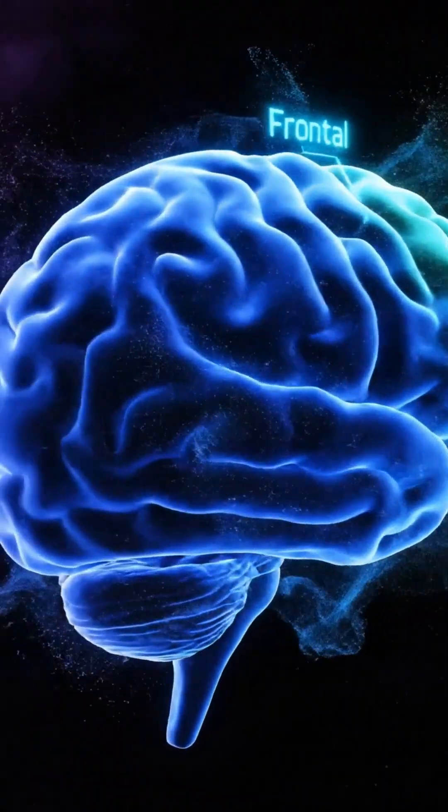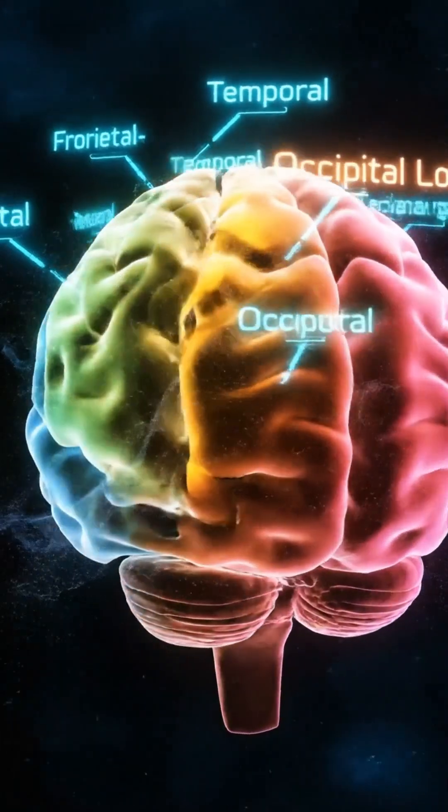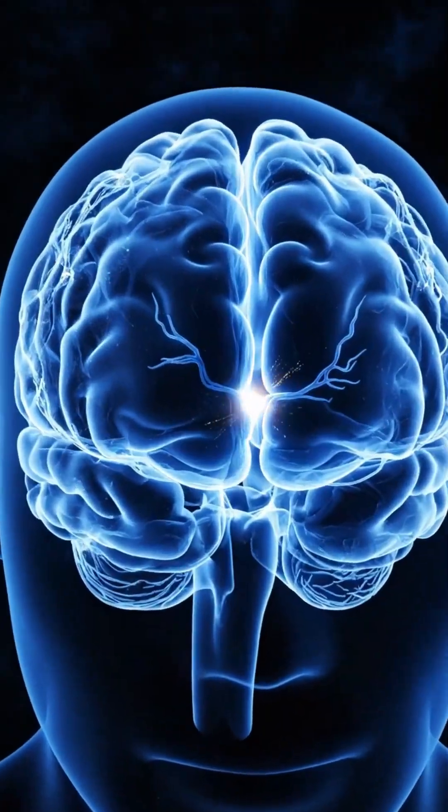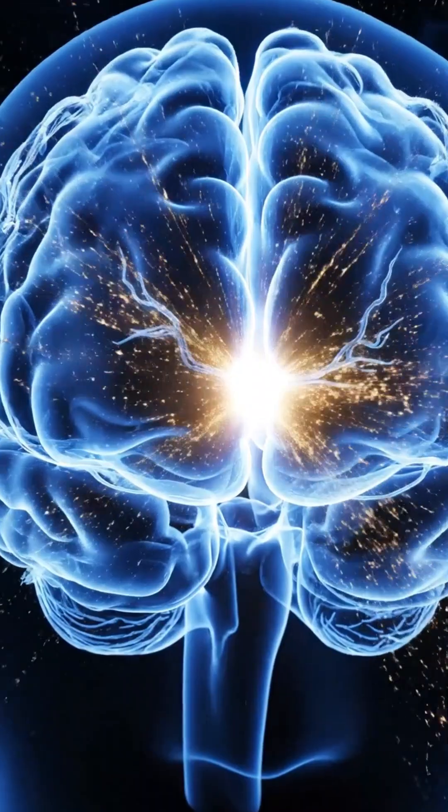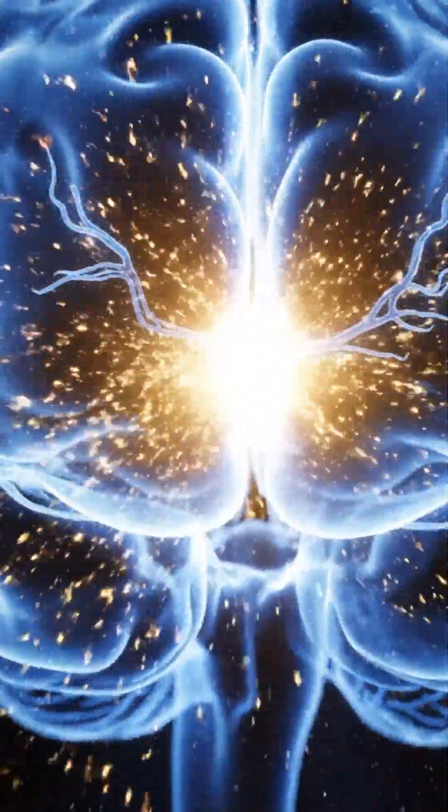Each lobe of the brain performs unique functions, from reasoning and memory, to vision, hearing, and motor control. The frontal lobe drives our decisions, planning, and problem-solving, shaping the choices that define our lives.